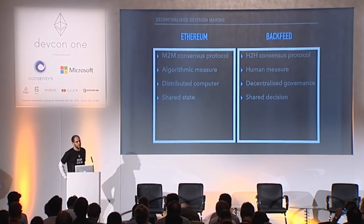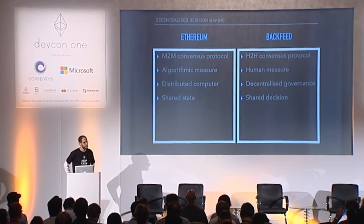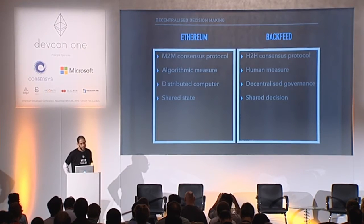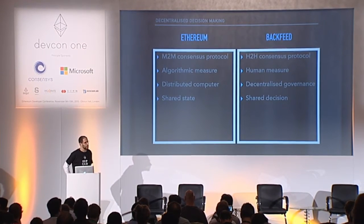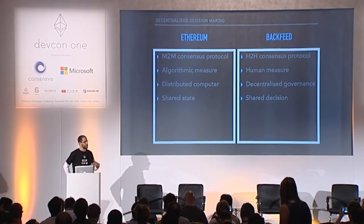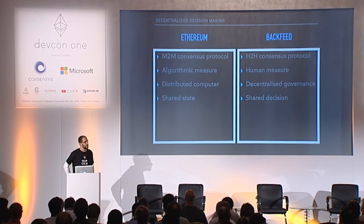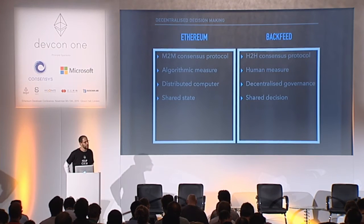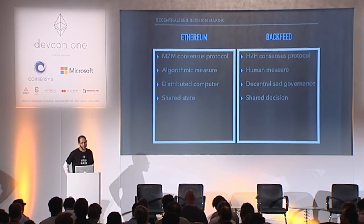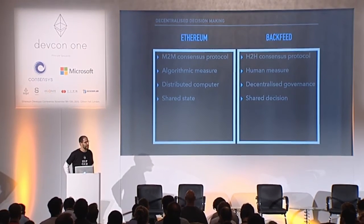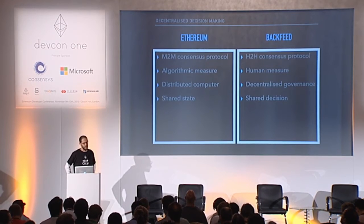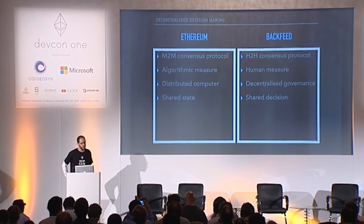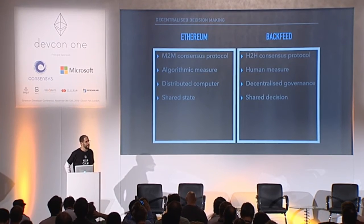Let me tell you about what Backfeed is with respect to what Ethereum is, which you're already quite familiar with. Ethereum, or the Ethereum blockchain, is basically a machine-to-machine consensus protocol. The consensus that lets many nodes distributed around the globe connect, agree, and exchange value is triggered by algorithmic measurable quantities — algorithmically quantifiable data such as proof-of-work, proof-of-stake, et cetera. In essence, that makes a distributed computer which allows all those nodes in the network to share a state together.